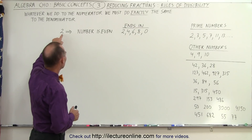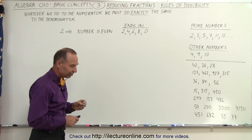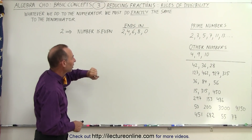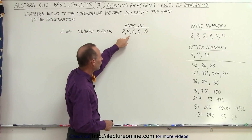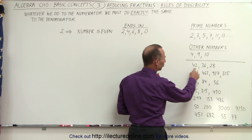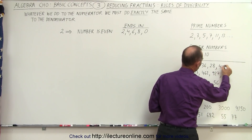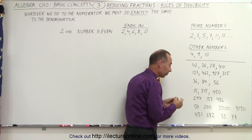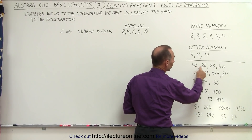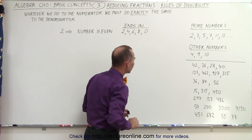First of all, the number 2, the smallest prime number. A number is divisible by 2 when the number is an even number, which means that the number ends in a 2, a 4, a 6, an 8, or a 0. Examples of that are 42, 36, 28, and 40. All those numbers are divisible by 2 because they end with an even number or the number 0.